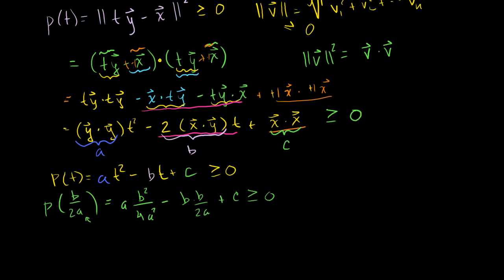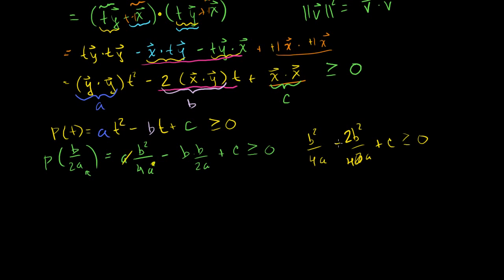Getting a common denominator: b²/4a − 2b²/4a + c ≥ 0, which gives −b²/4a + c ≥ 0. Adding b²/4a to both sides, we get c ≥ b²/4a. We're approaching something that looks like the inequality we want. Now let me multiply both sides by 4a — and a is positive, so the inequality sign doesn't change — giving us 4ac ≥ b².